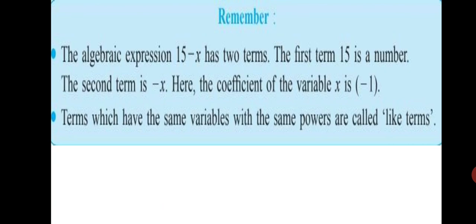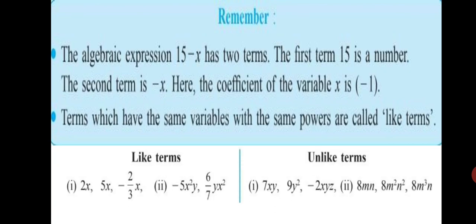Terms which have the same variables with the same powers are called like terms. So, what are like terms? Let's have look at some examples. The first one, 2x, 5x, minus 2 upon 3x. All the variables are the same, that is x. So, these terms in the expression 1 are called like terms.